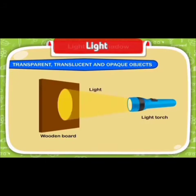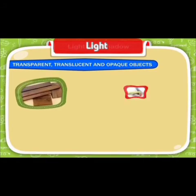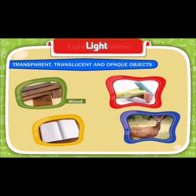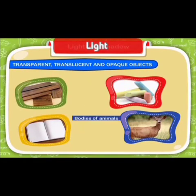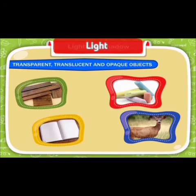Objects which do not allow light to pass through them at all are called opaque objects. No object can be seen through them. Wood, chalk, notebook, and bodies of animals are examples of opaque objects.